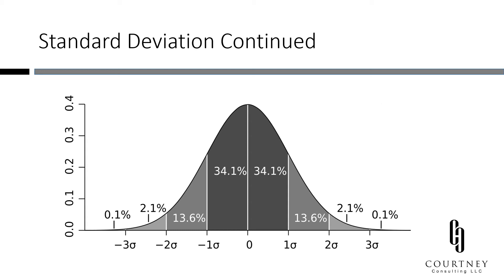Let's look at an example with some numbers. Let's say you give a test on a 100-point scale. Your students scored an average of 65, with a standard deviation of 15. Your mean is 65, so it goes right in the middle. 68.2% of your students scored between 50 and 80 — that is within one standard deviation. The rest of your students scored beyond that mark.